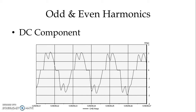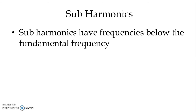We usually look at harmonics as integer numbers, but some applications produce harmonics that are not integers. Electric arc furnaces and arc welders are examples of loads that generate non-integer harmonics. But in both cases, once the arc stabilizes the non-integer harmonics mostly disappear, leaving only the integer harmonics. Sub-harmonics have frequencies below the fundamental frequency, and they may arise due to resonance between harmonic currents or voltages with the power system capacitance and inductance.